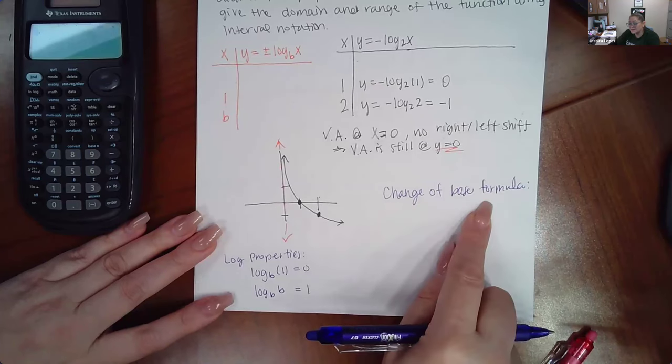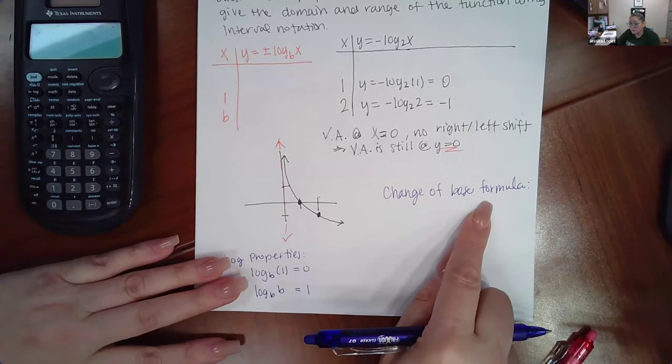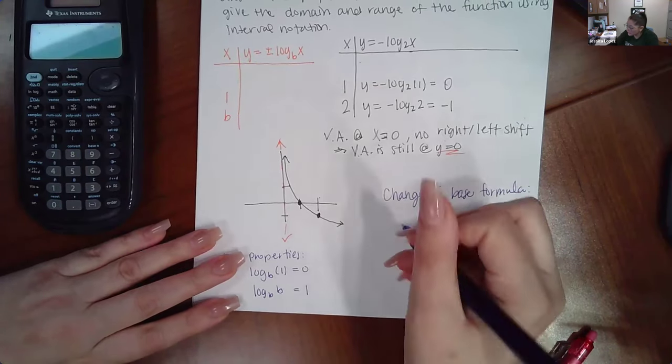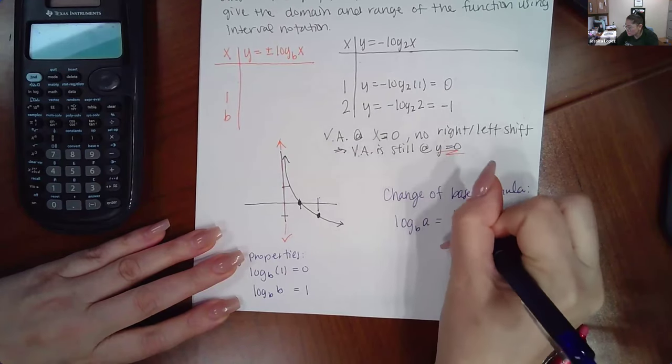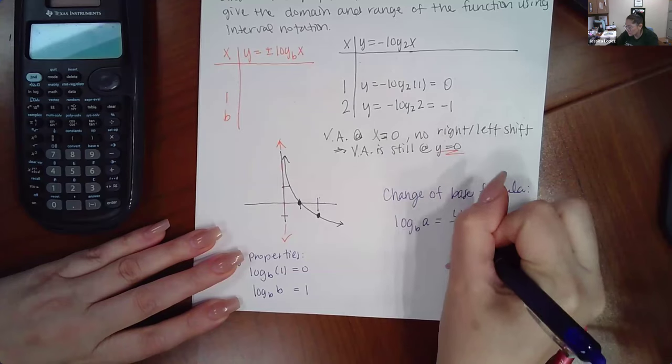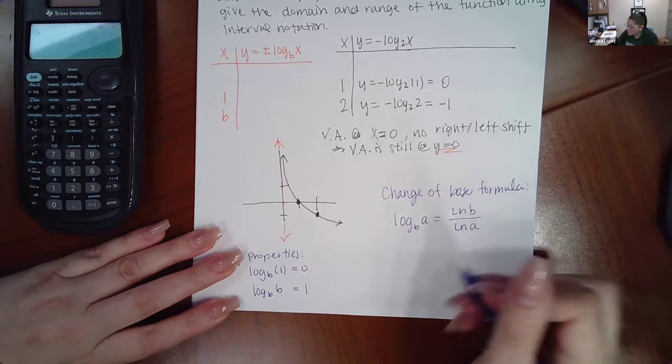Now, if I wanted to type it in my calculator, you can use the change of base formula. If you have log with a base and an argument, you're just doing ln of the base over ln of the argument.